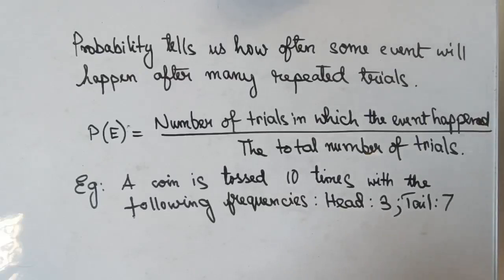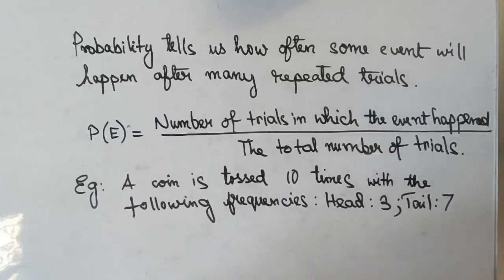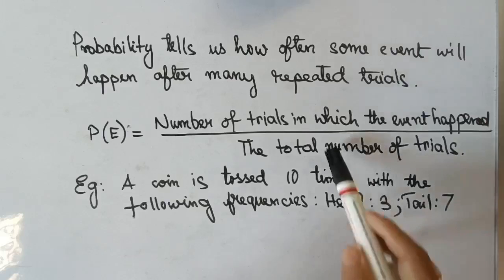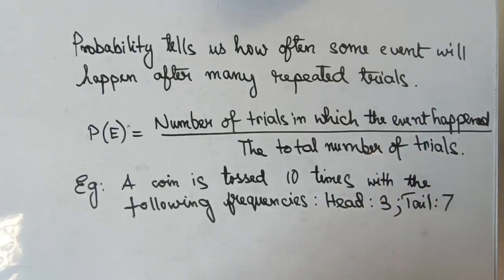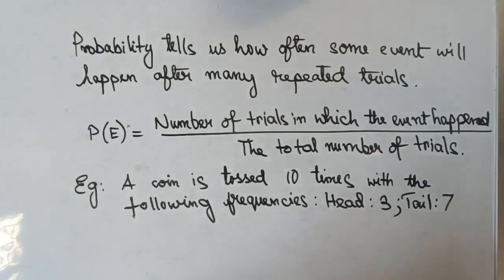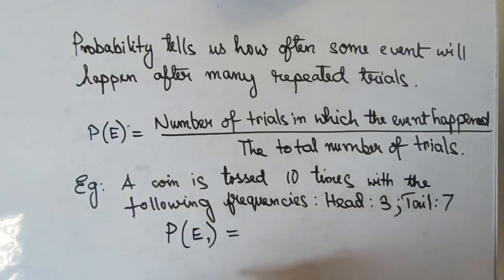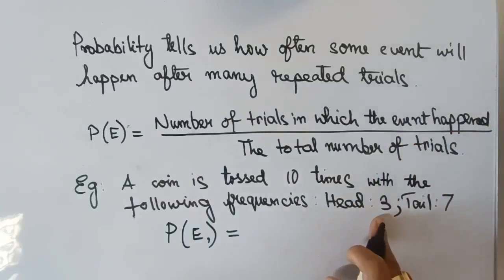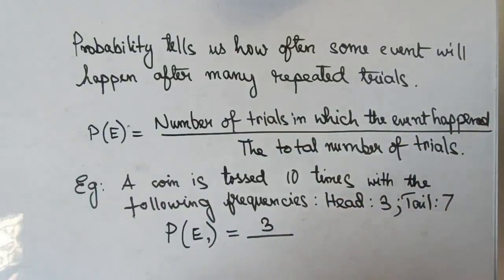Now let us come to the definition of probability. Probability tells us how often some event will happen after many repeated trials. The probability of an event is given by the number of trials in which the event happened divided by the total number of trials. For example, a coin is tossed 10 times with the outcome head occurring 3 times and tail 7 times. The probability of getting a head is 3 divided by the total number of trials.